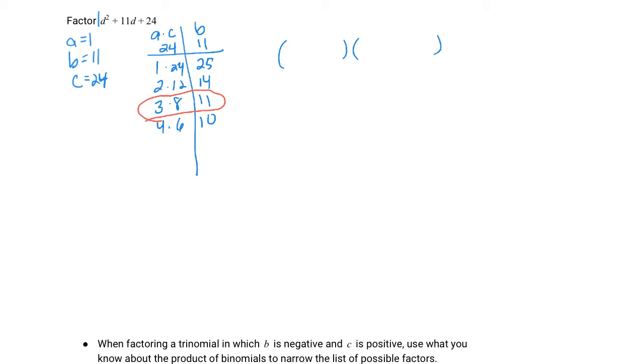Same idea as before, two parentheses, variable in front. Each factor goes on the tail end. So (d + 3)(d + 8). We want to check this. We use the FOIL method. d² + 8d + 3d + 24. Combine like terms. d² + 11d + 24 matches what we did.